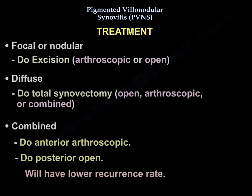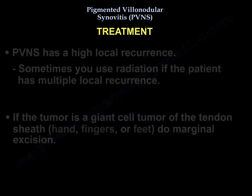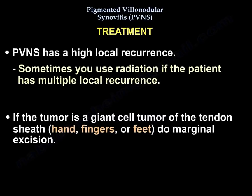Regarding treatment: if the lesion is focal or nodular, excision is performed — either arthroscopic or open. If it is diffuse, total synovectomy is required, which can be done open, arthroscopic, or combined — meaning anterior arthroscopic and posterior open — which has a lower recurrence rate than posterior arthroscopic alone. The main problem with PVNS is high local recurrence. Radiation may be used for multiple local recurrences. If the tumor is giant cell tumor of the tendon sheath in the hand, fingers, or feet, marginal excision is performed.